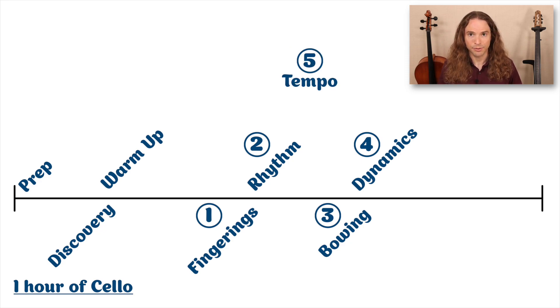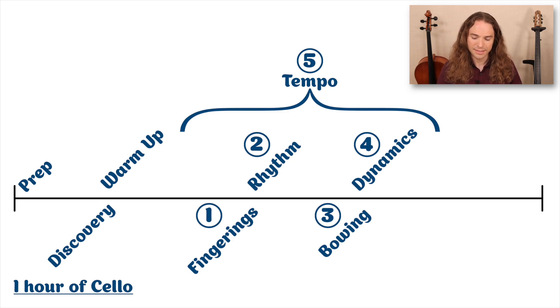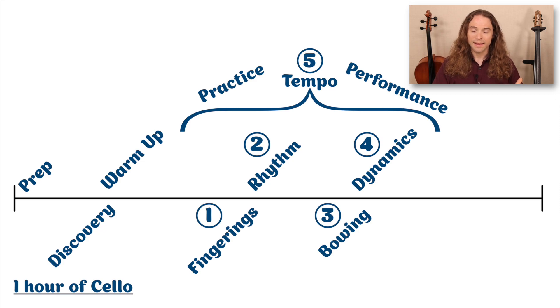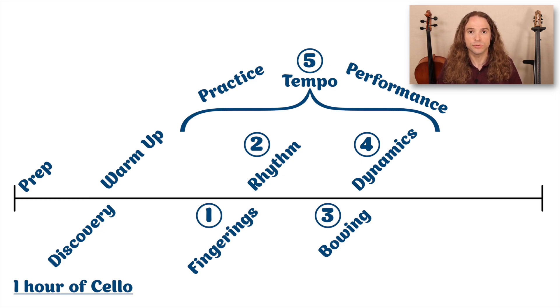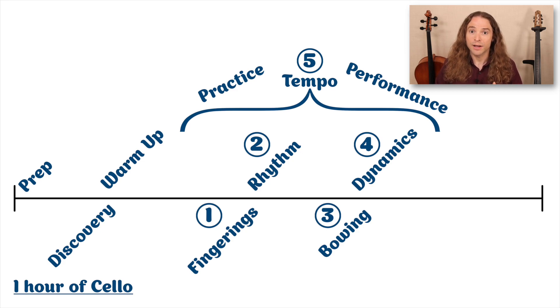The fifth stage is tempo. As you'll notice, it is not on the same linear path as everything else, because tempo exists in a world of its own — always at a practice speed, eventually evolving to performance speed. The reason I place tempo in a completely different dimension is because it encompasses all the others: fingering, rhythm, bowing, and dynamics. As you're playing at practice speed and learning to reach performance speed, you may have to look deeper and find fingerings, bowing, or articulation that will work as tempo reaches its performance speed.